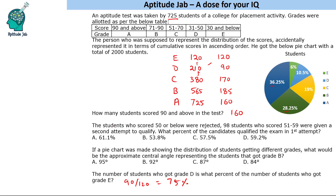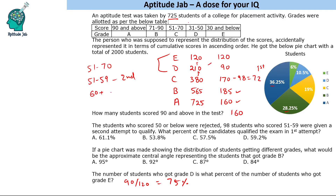Now, these two questions: the students who scored 50 or below were rejected. So 50 or below means up to grade D — these are rejected. 98 students who scored 51 to 59 were given a second attempt to qualify. Now 51 to 59 will be 98 out of these people. So when you subtract 98 from this, you get 72 — these are qualified in the first attempt. Grade C is 51 to 70, and 51 to 59 were given second attempt, so 60 plus will qualify in the first attempt.